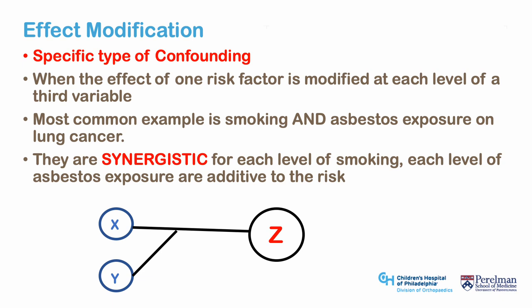Effect modification is a special type of confounding where different levels of a variable affect the outcome in a synergistic fashion with the primary regressor of interest. A common example is smoking and asbestos exposure on lung cancer — these two are synergistic at each level of smoking. In a regression, one can add a combination variable (asbestos times smoking); if this variable adds significantly to the R-squared and is an independent predictor in multivariate analysis, it is likely evidence of effect modification.